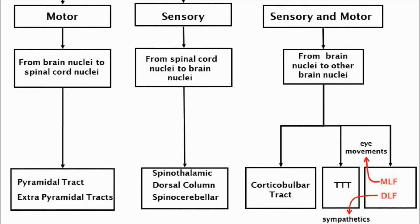This is where the information is eventually processed. The spinothalamic and dorsal column pathways both have three neurons in a sequence and they cross somewhere, either in the spinal cord or in the brain itself. The spinocerebellar pathway only has two neurons in the sequence and its fibres do not cross. The spinothalamic tract carries information concerning general touch, pain, temperature and pressure.